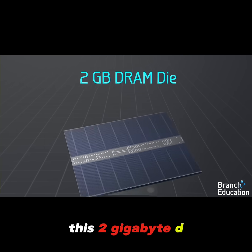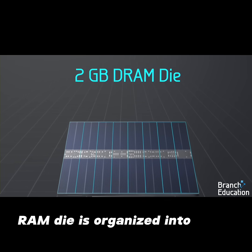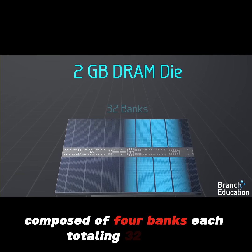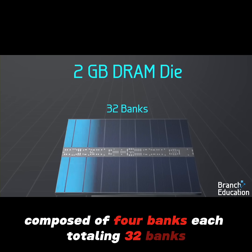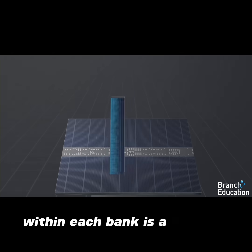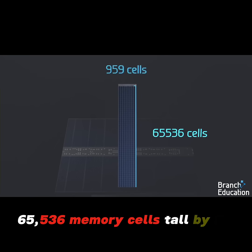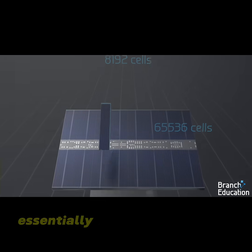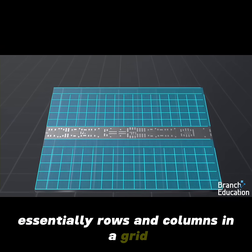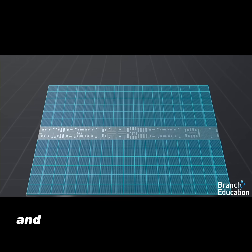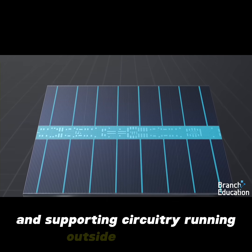This 2GB DRAM die is organized into 8 bank groups composed of 4 banks each, totaling 32 banks. Within each bank is a massive array — 65,536 memory cells tall by 8,192 cells across, essentially rows and columns in a grid with tens of thousands of wires and supporting circuitry running outside each bank.